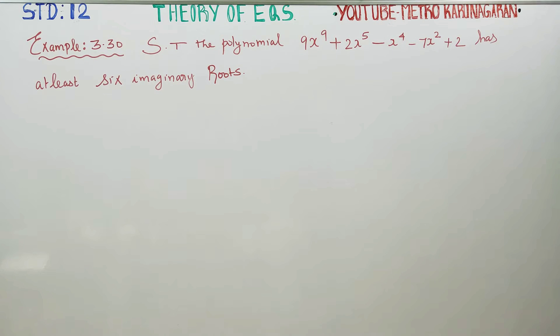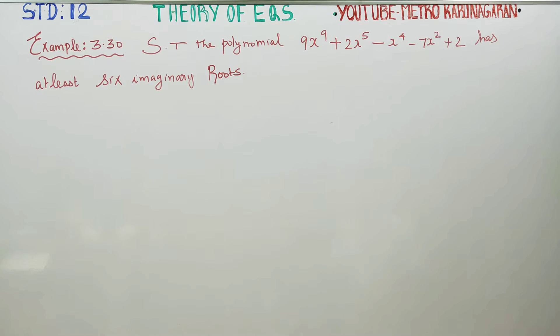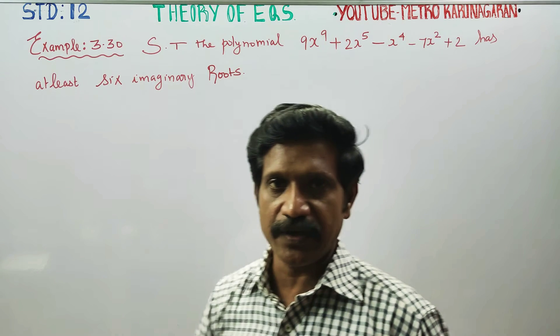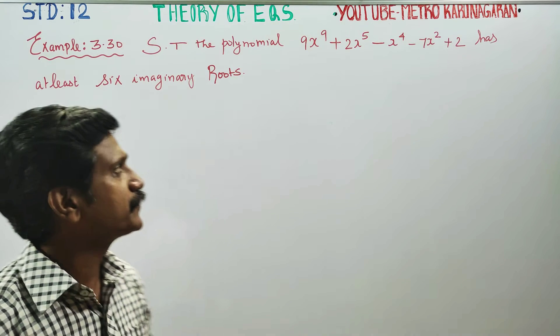Dear 12th standard students, I am Vetro Karnagaran. In theory of equations, Example 3.30: show that the polynomial has at least 6 imaginary roots.